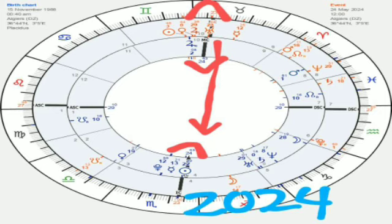It's conjunct Israel's sun, but it is opposed the sun of Palestine. And that transit was going on or is going on from about August 2023. The retrograde hit, of course, at the end of September when the Gaza conflict with Israel started, and it finalizes in May of 2024.